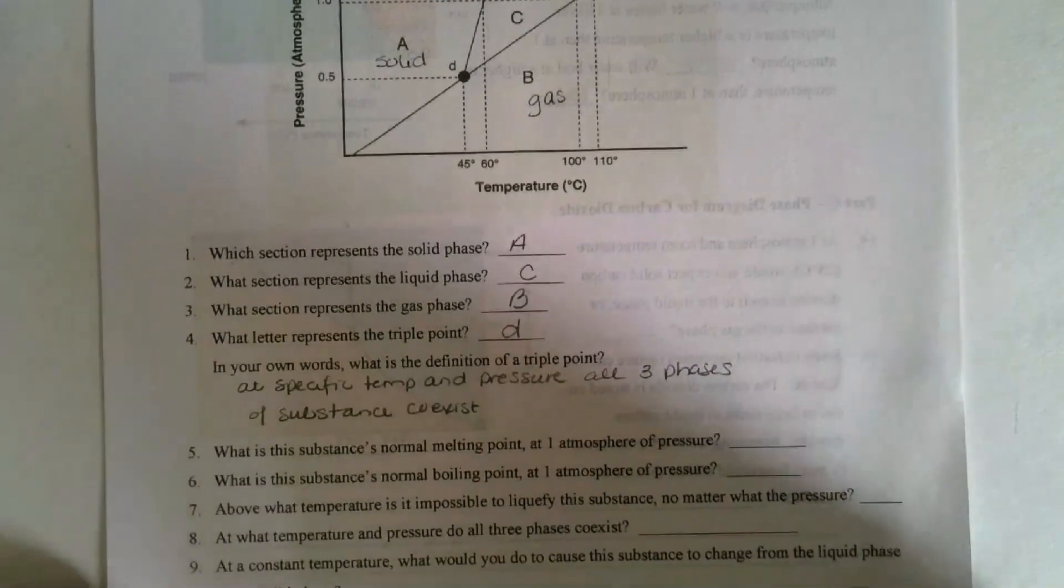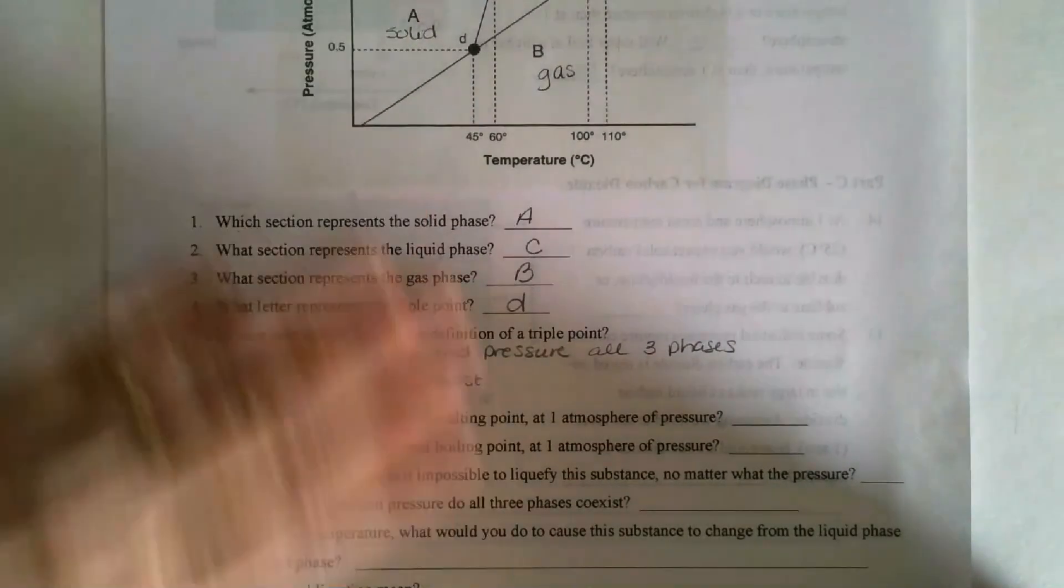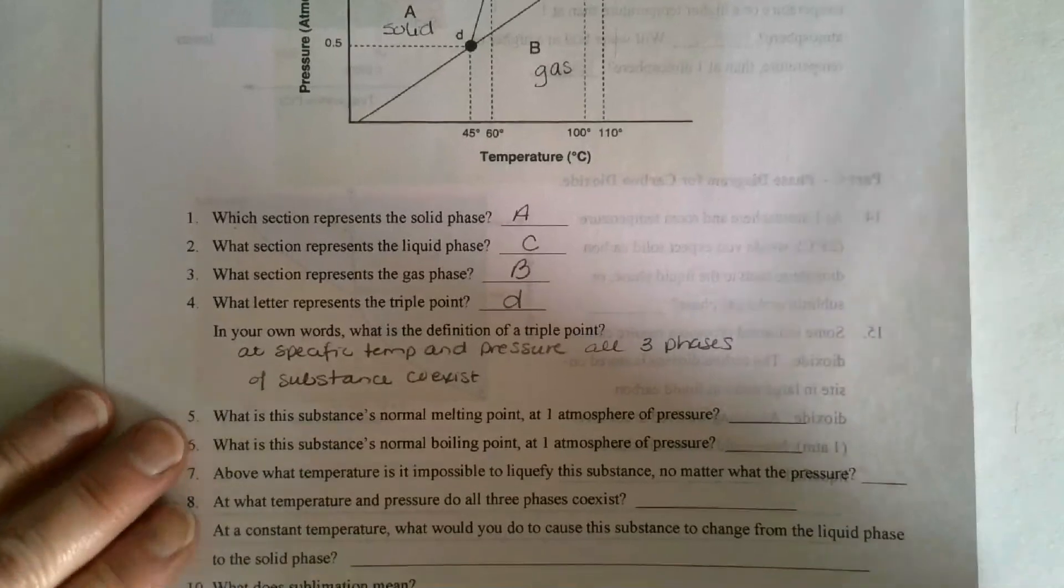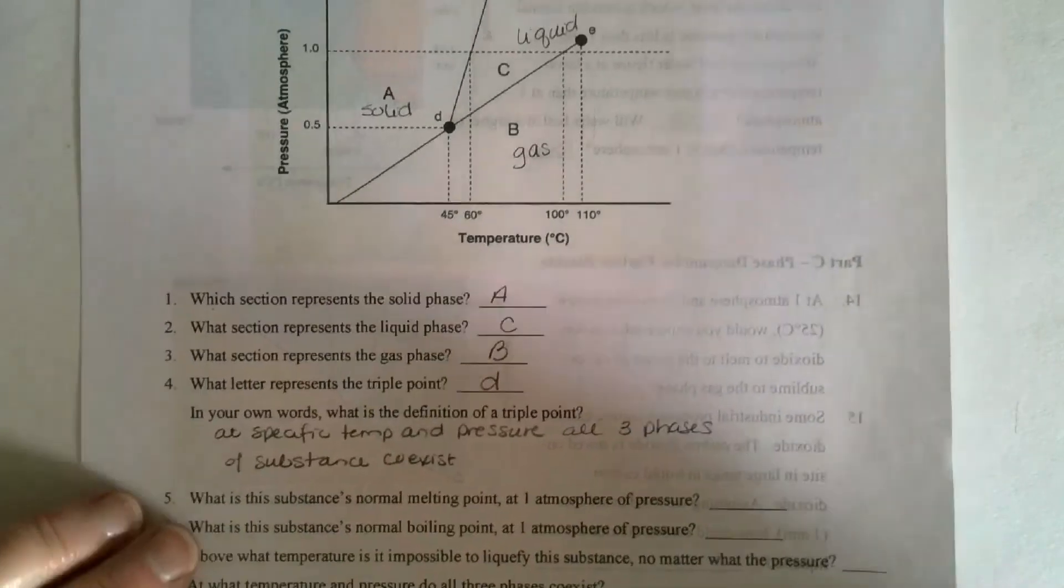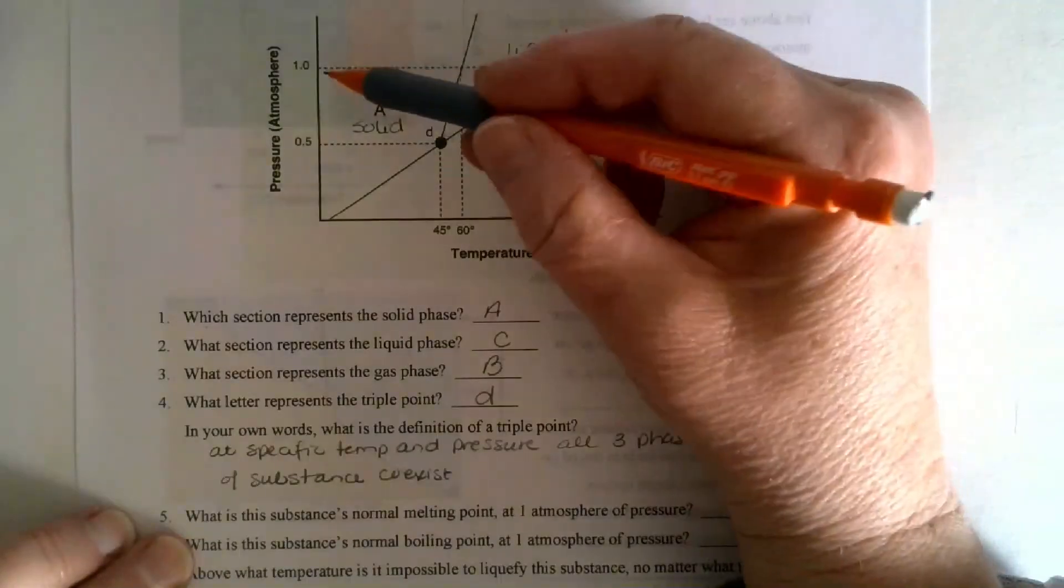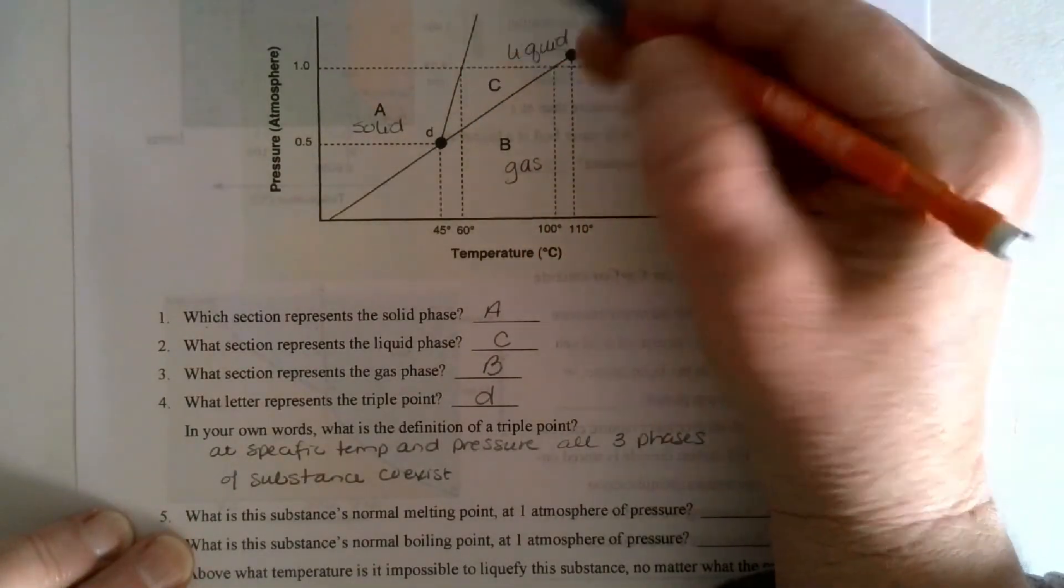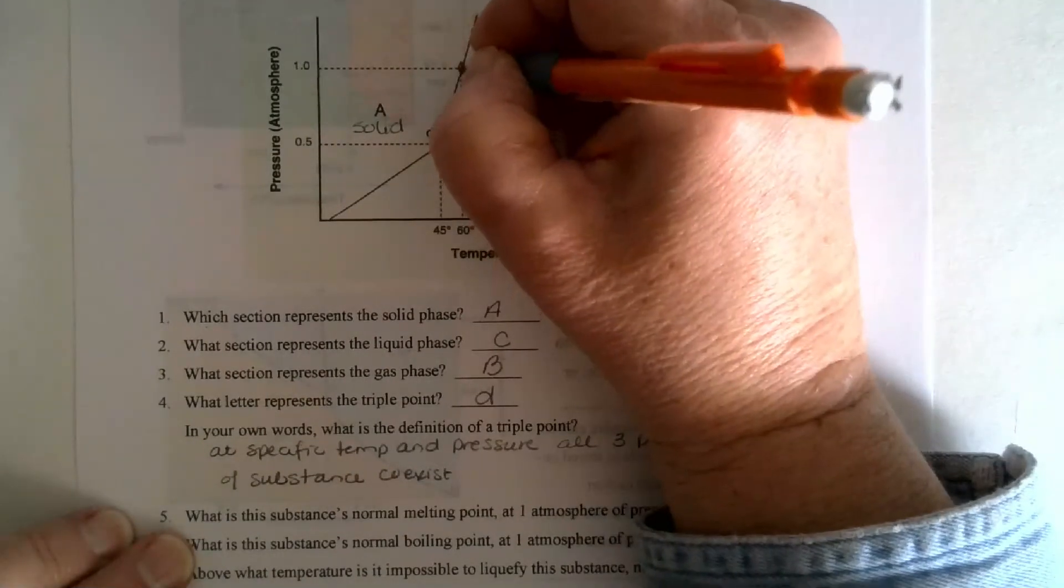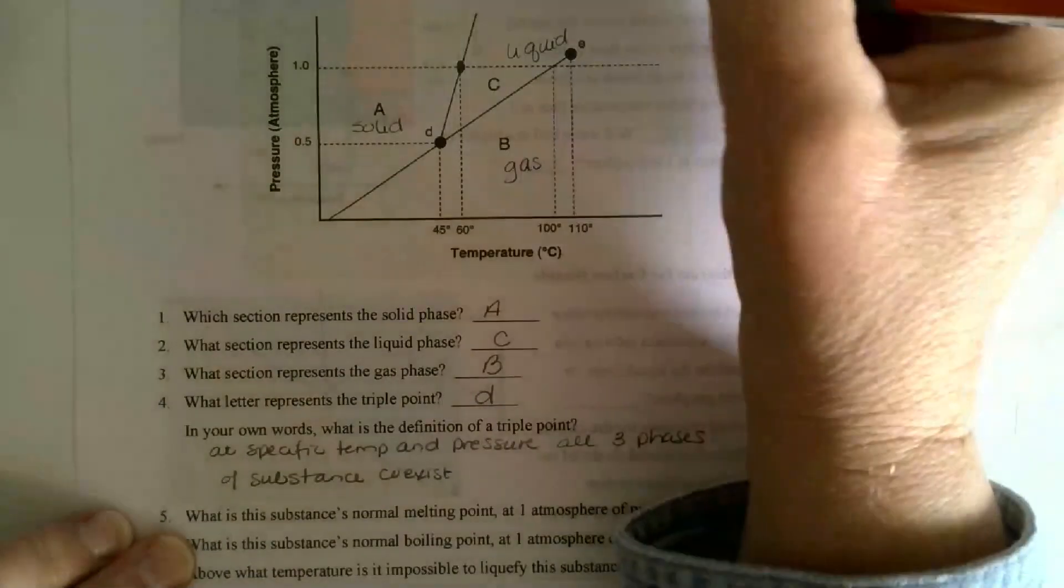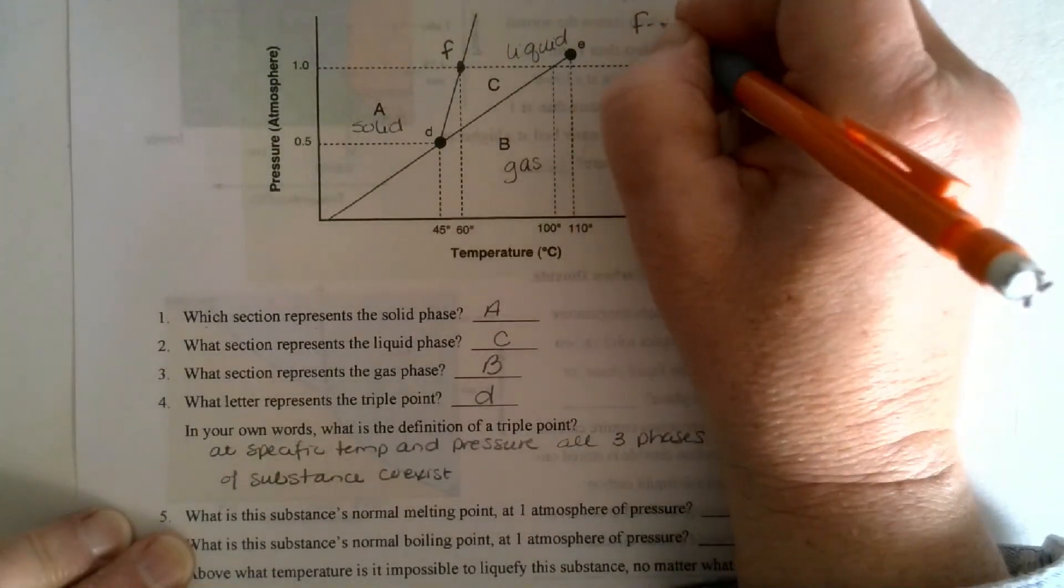Then the next question is, and I'm just going to read them here and we'll keep it up here because you don't have this sheet. So I just want you to be aware of what we're looking at here. The normal melting point at one atmosphere of pressure. So let's go up to one. Melting mean I'm going from a solid to a liquid. So right here. And what do we have? We have an E. So letter F. F melting point.